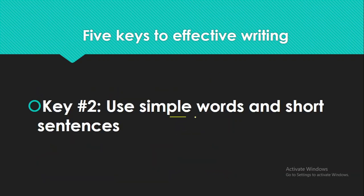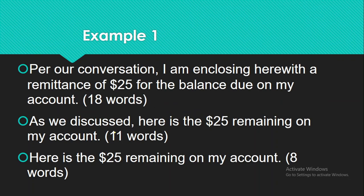The second key is that you have to use simple words and short sentences. Let's have a look at this example: 'Per our conversation, I'm enclosing herewith a remittance of $25 for the balance due on my account.' That's 18 words. You can convey the same message by saying 'As we discussed, here is the $25 remaining on my account' — that is 11 words. Or simply 'Here is the $25 remaining on my account' — just 8 words. The last statement is easy to read, simple, and comparatively better understood.